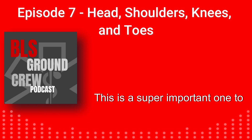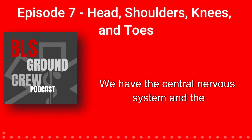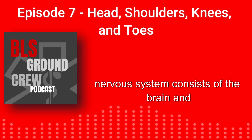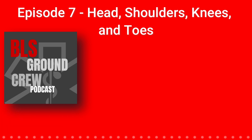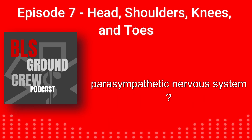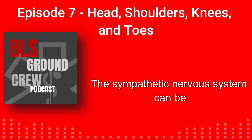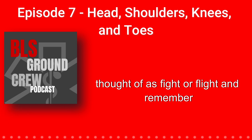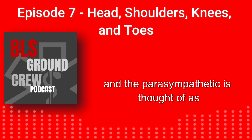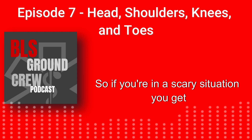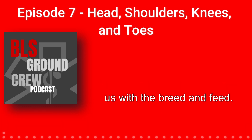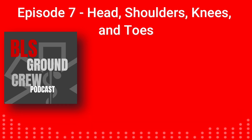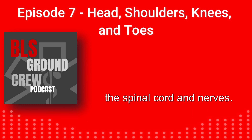The nervous system is a super important one to understand. We have the central nervous system and the peripheral nervous system. The central nervous system consists of the brain and spinal cord only. The peripheral nervous system consists of all the other nerves. Then there's the autonomic nervous system, which includes the sympathetic and parasympathetic nervous systems. The sympathetic is think of as fight or flight, while the parasympathetic is thought of as rest and digest. The nervous system overall consists of the brain, spinal cord, and nerves.